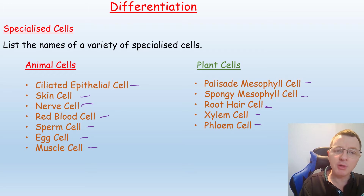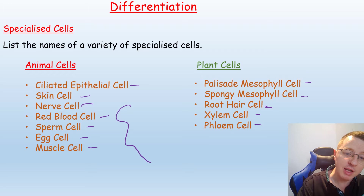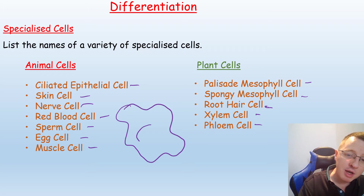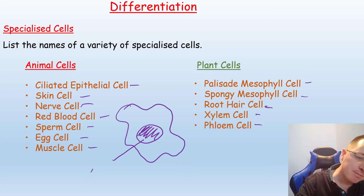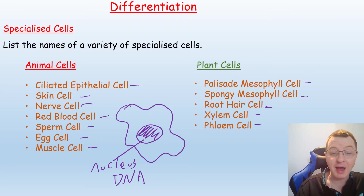But how is it that an organism can be made out of all of these different specialised cells? Each of these specialised cells has got the same basic features — a cell membrane, a cytoplasm, and within that a nucleus. The nucleus will contain DNA.